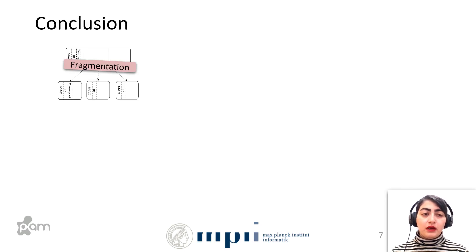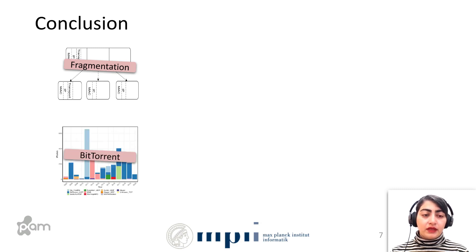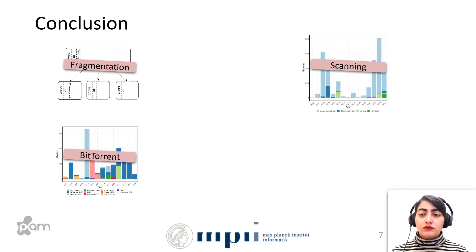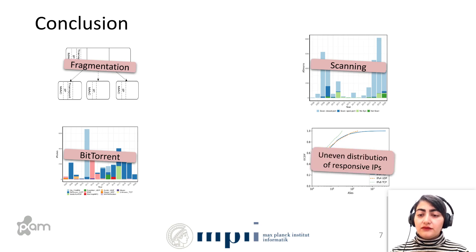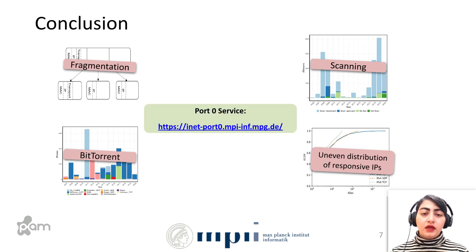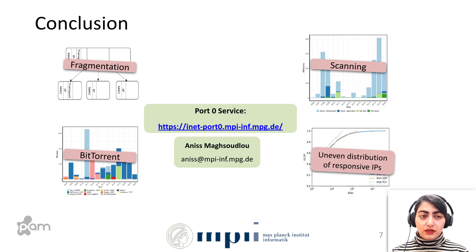In summary, we analyzed different causes for port 0 traffic. Fragmentation appeared responsible for port 0 traffic at the IXP. BitTorrent was also partly contributing in the Mavi dataset, and scanning was another contributor. Scans to open ports in Mavi led us to perform active measurements, which confirmed that open port 0s do exist in the wild, though the distribution of responsive IP addresses was uneven. We now perform periodic port 0 active measurements, results of which are available on our website. Thank you very much.